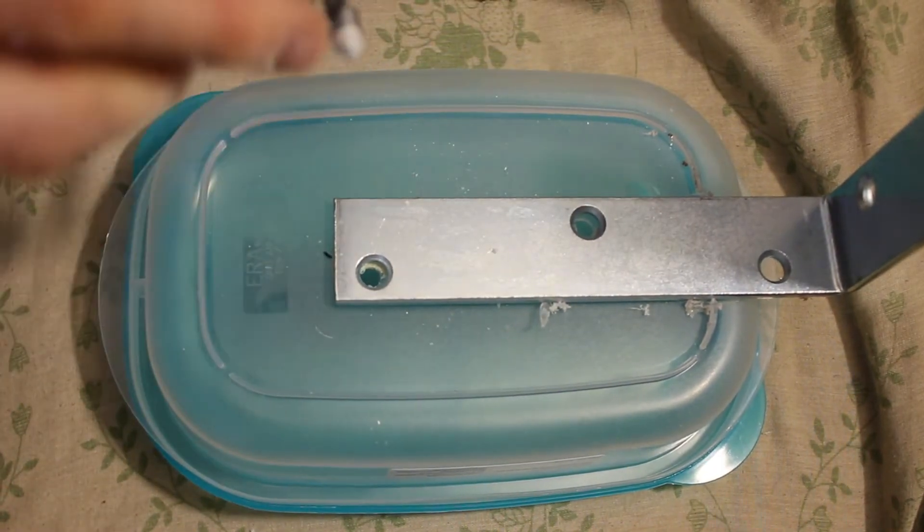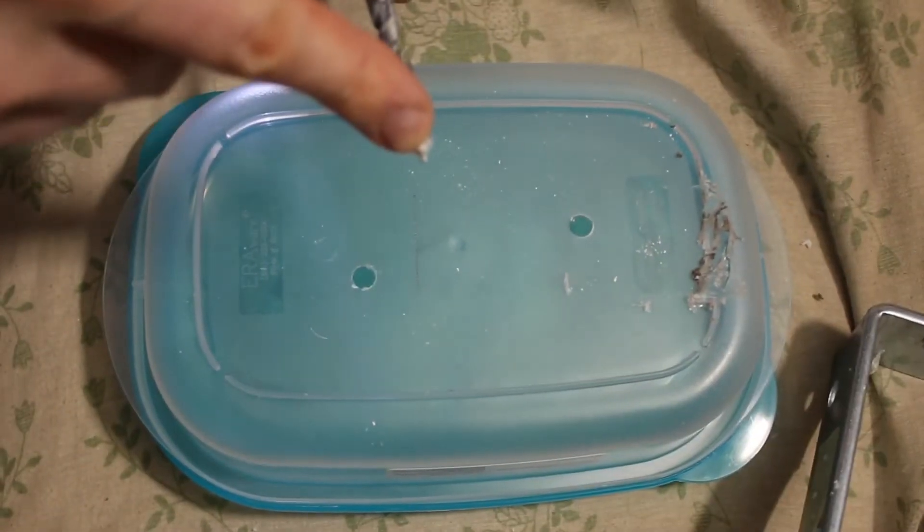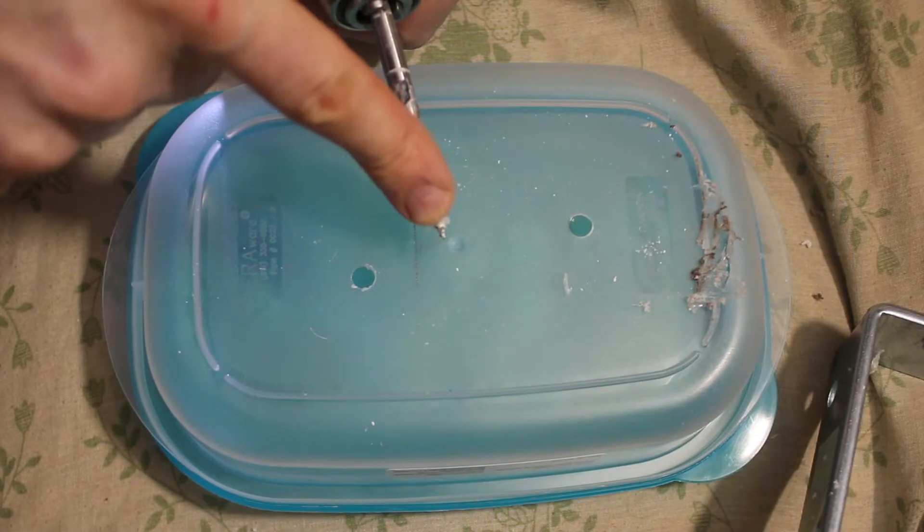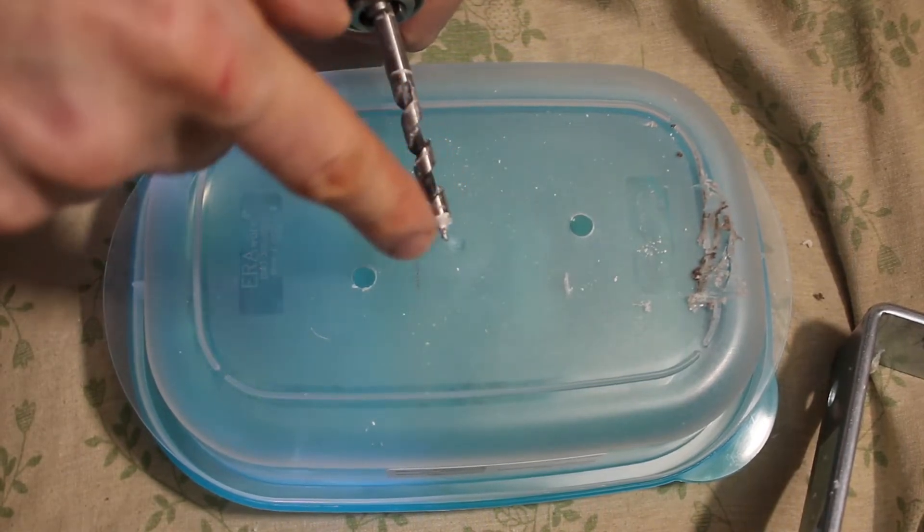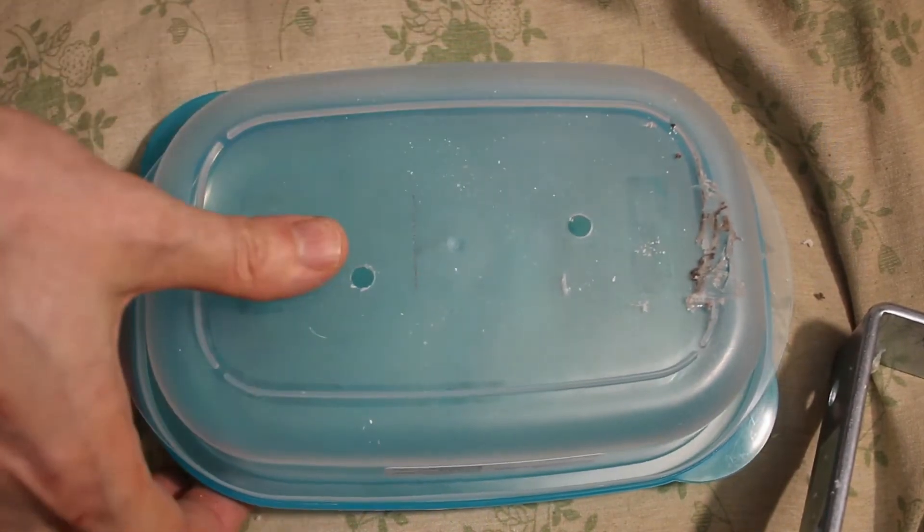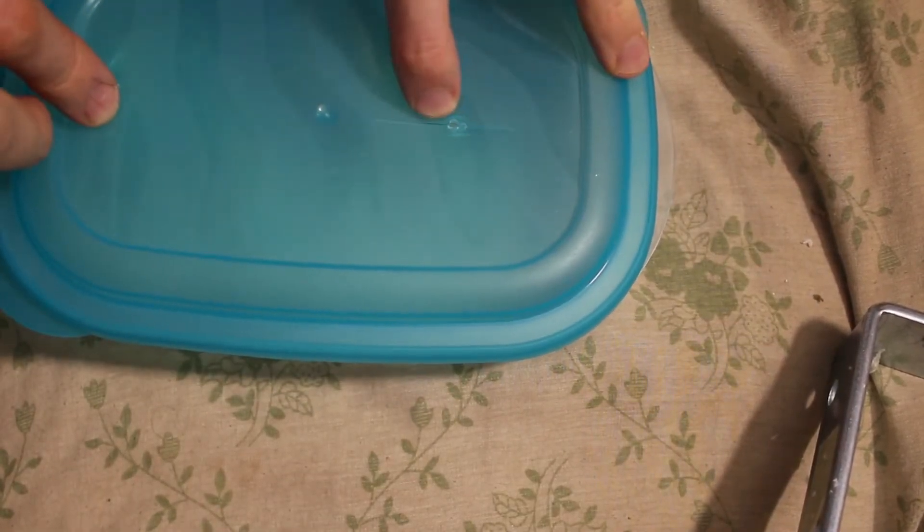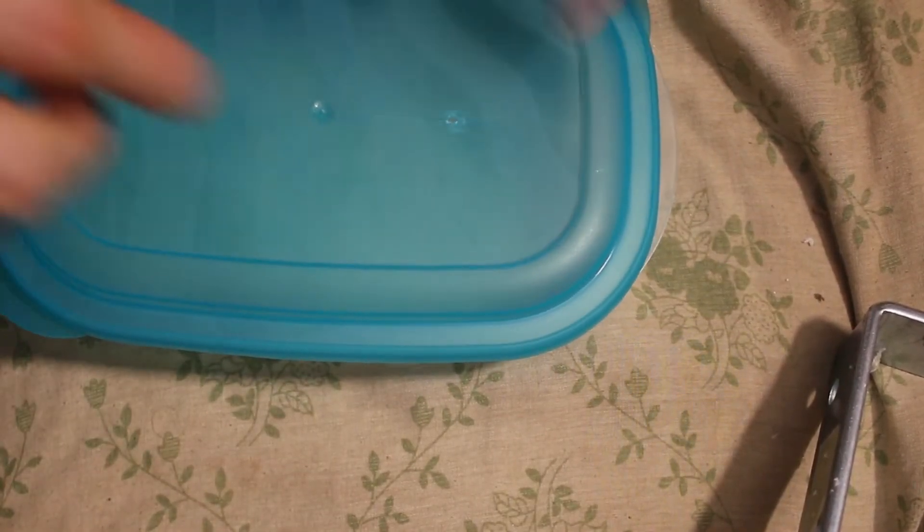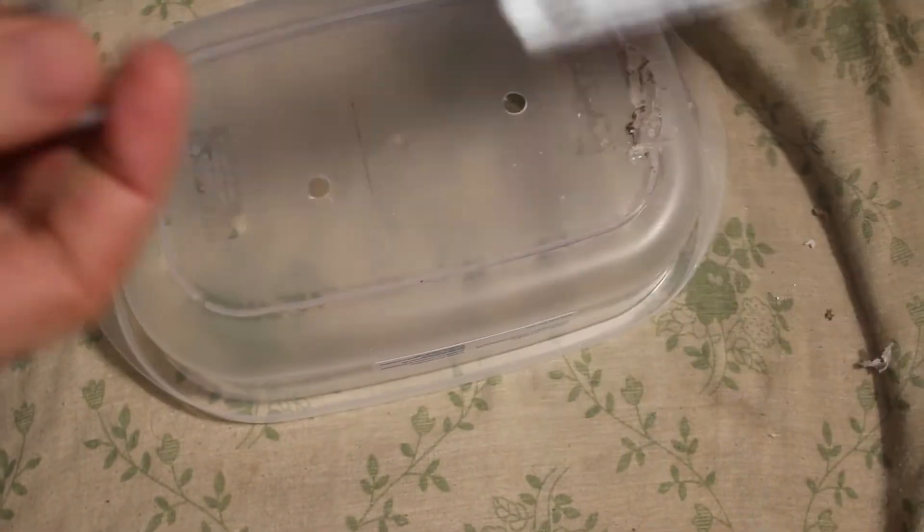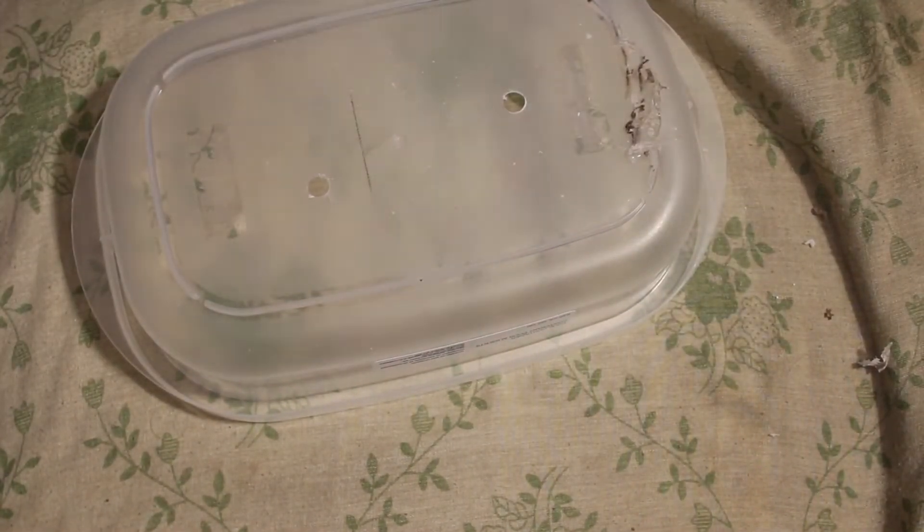What made that so easy is this is a wood drill bit, so the tip grabbed into the plastic. Now you can see here where I've gone through the lid, but that's okay because I'm going to be making some holes for the vapors to get out.